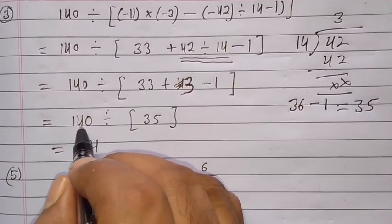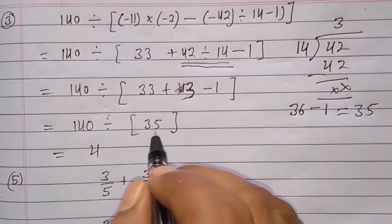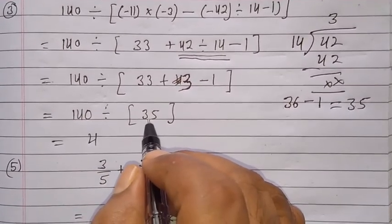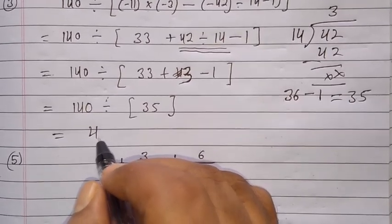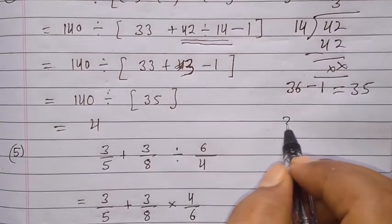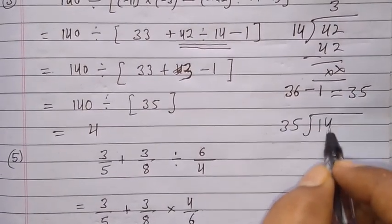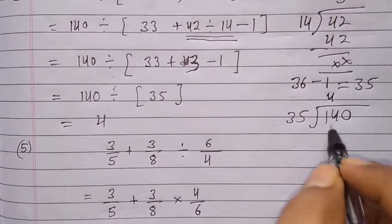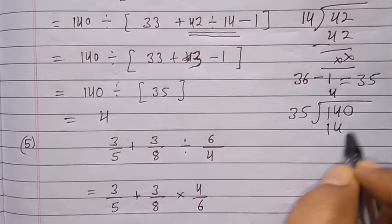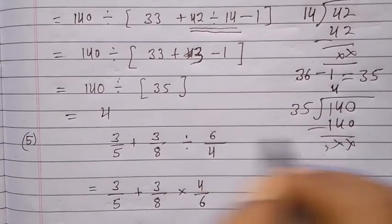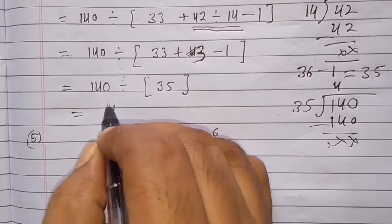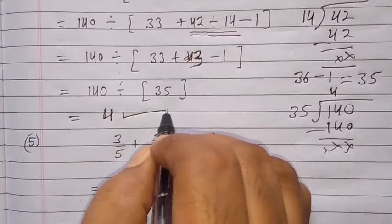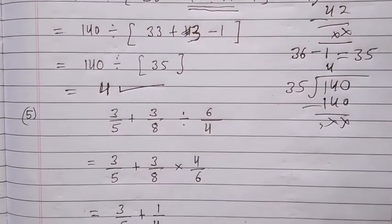Now remove the bracket: we get 140 divided by 35. 35 multiplied by 4 gives 140, so 140 ÷ 35 = 4. The answer is 4.